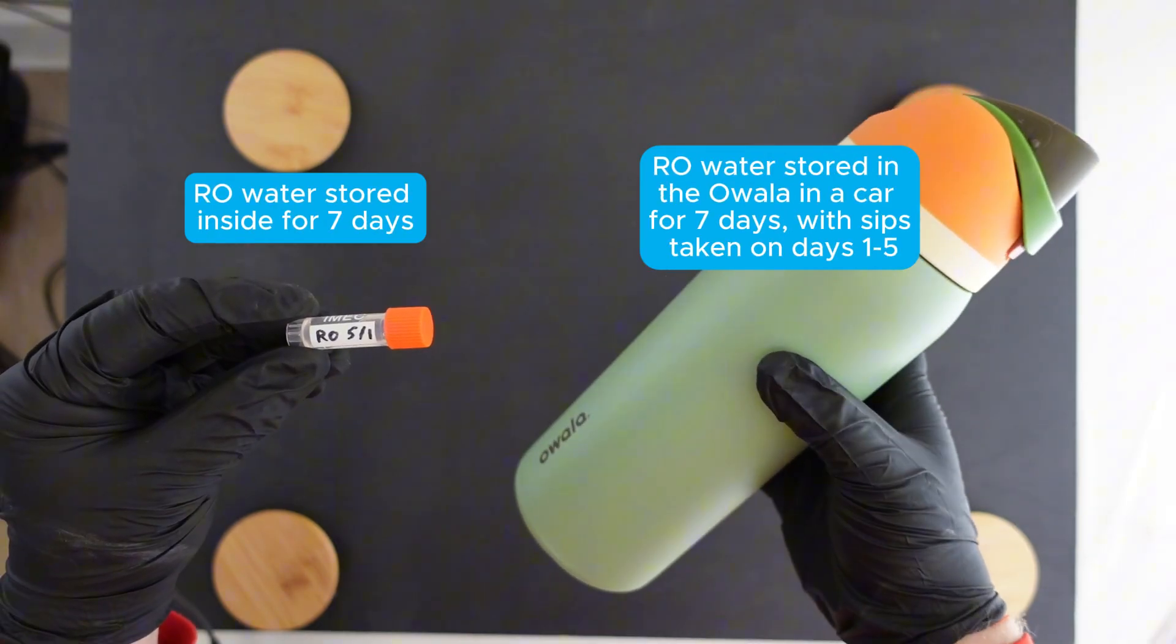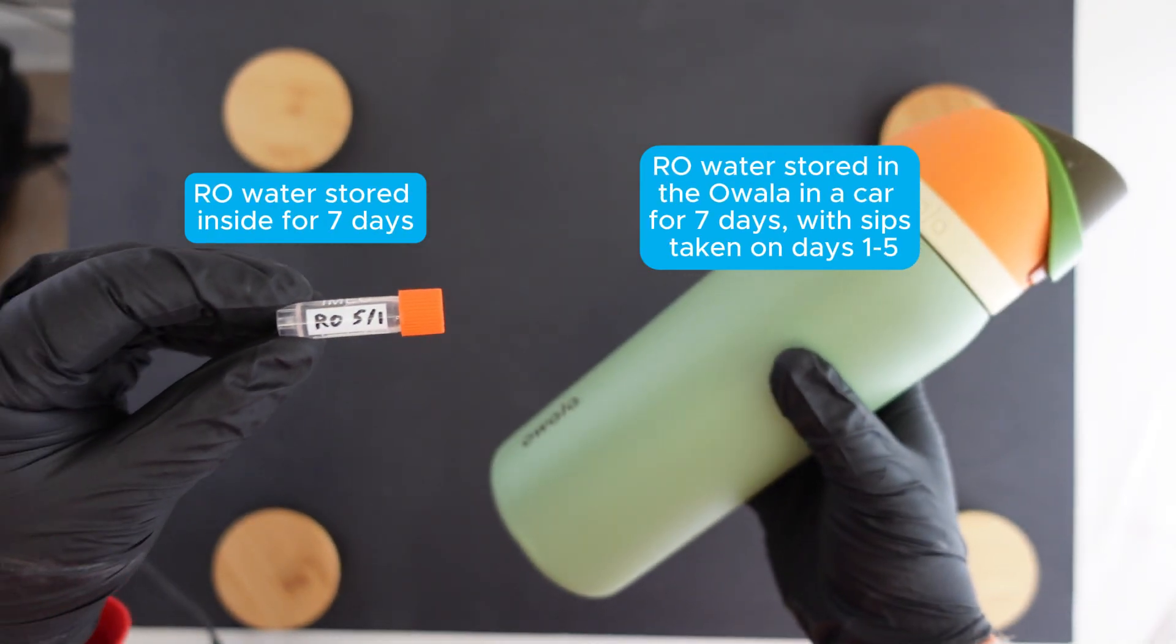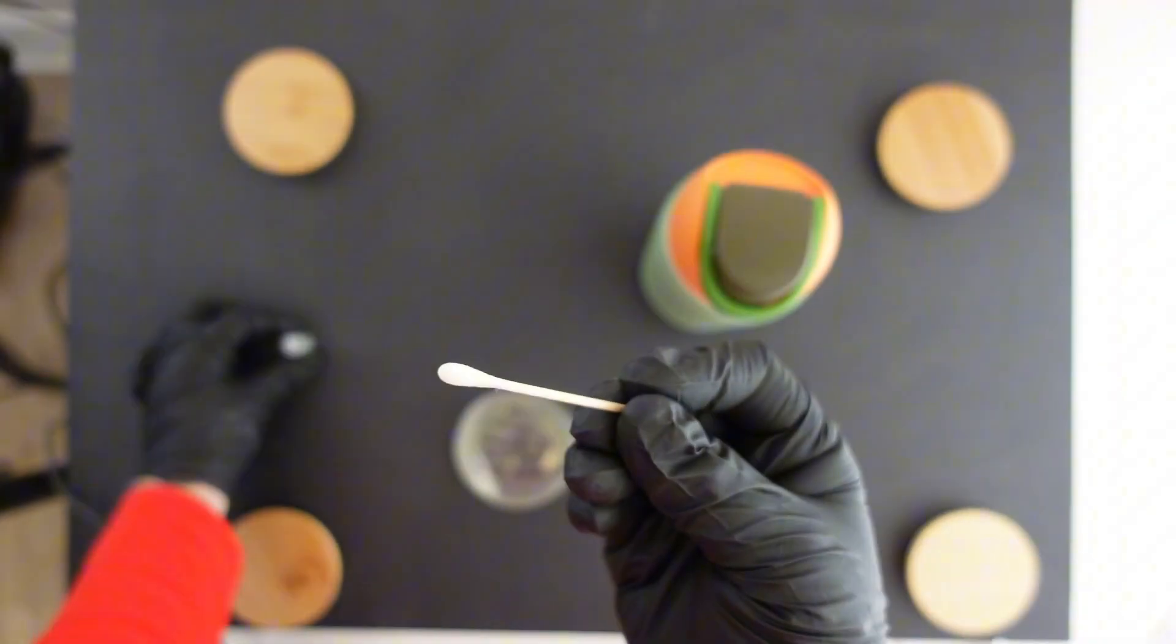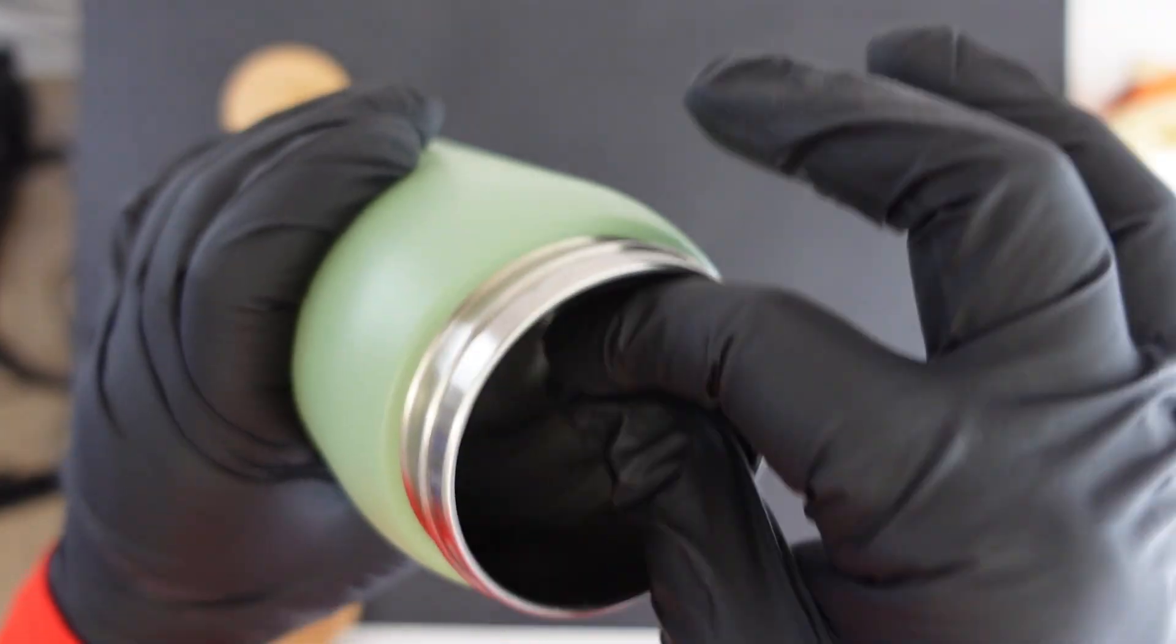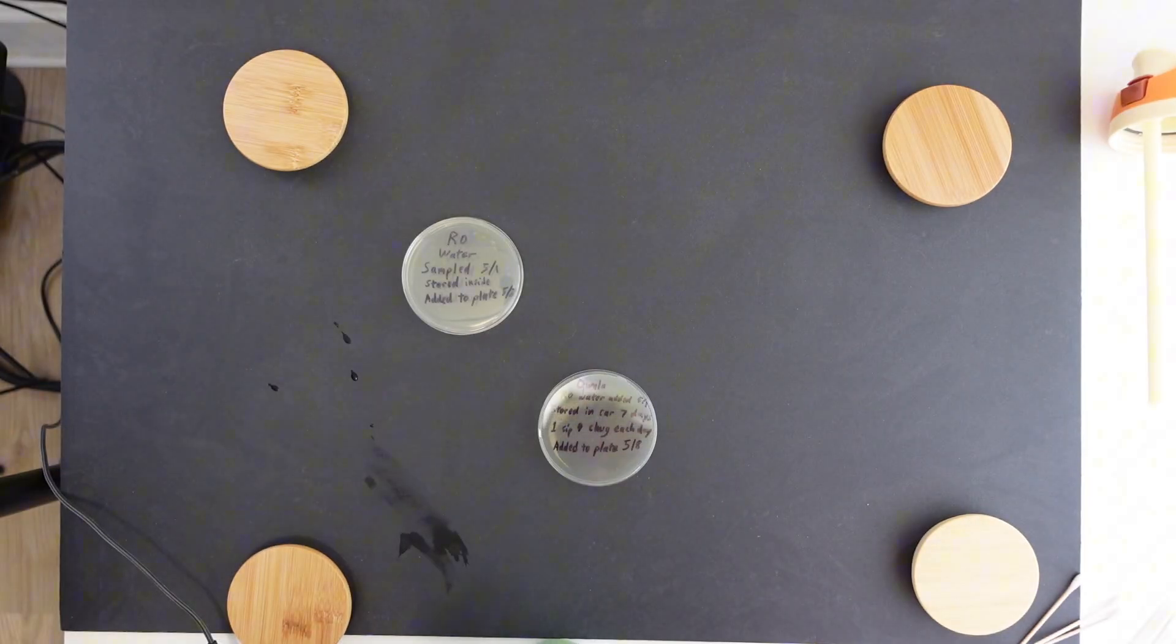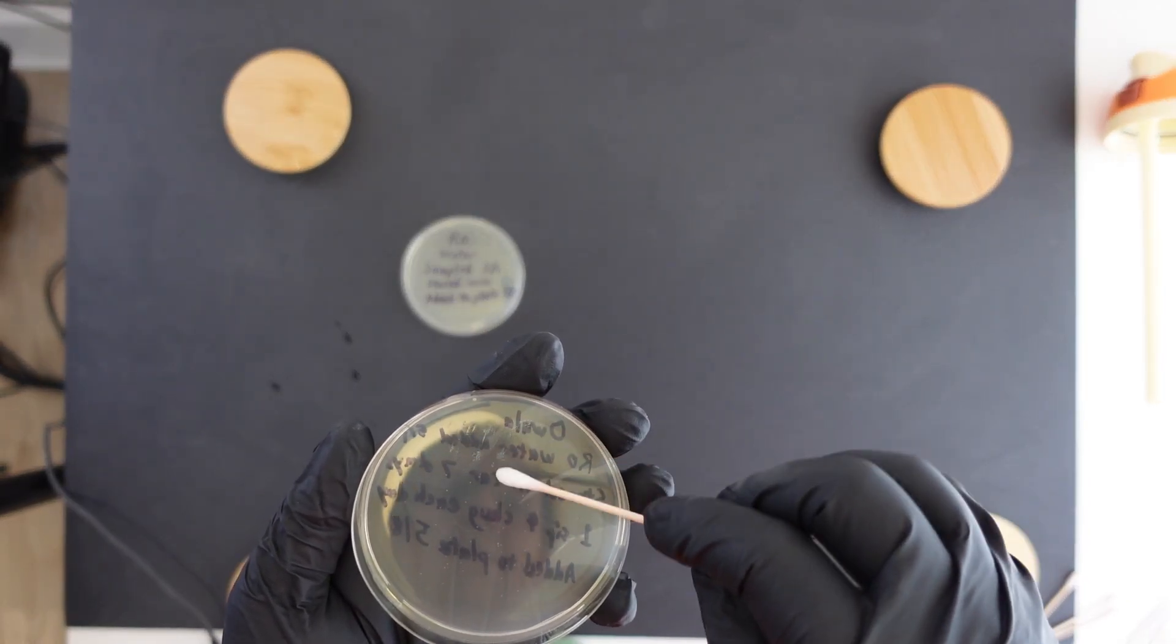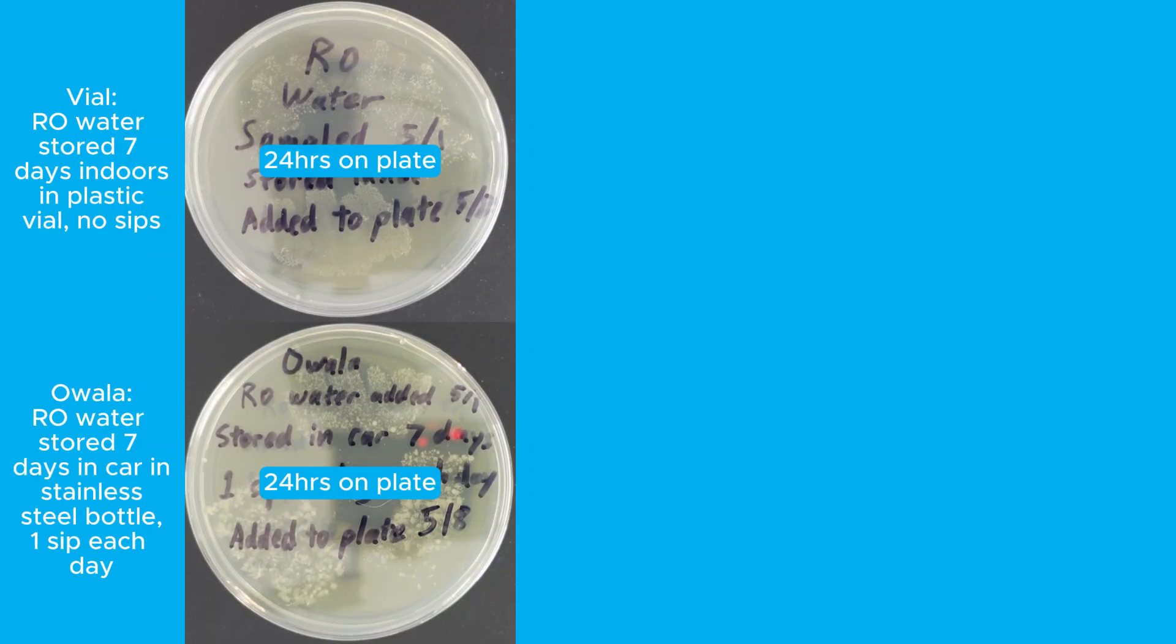Remember that little vial of fresh, clean RO water? I kept that stored indoors for seven days, then sampled it on this petri dish. Then I dipped swabs in the Owalla, which had been in the car for seven days, and put that on this other petri dish. Here are the results from each one after one day in the incubator. Even though the RO water is very pure, some bacteria grew on that petri dish because it's difficult to completely avoid bacteria with this kind of setup. But there was clearly more starting bacteria from the Owalla sample, and you can see how that led to a lot more growth and larger colonies.